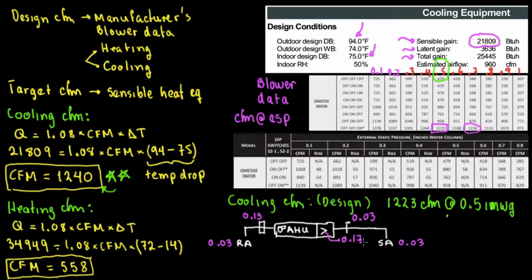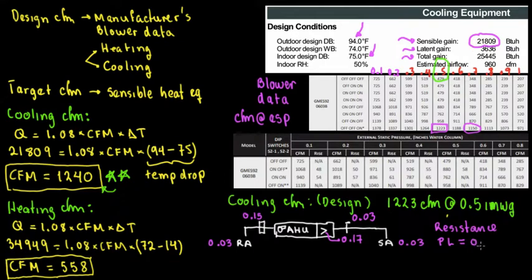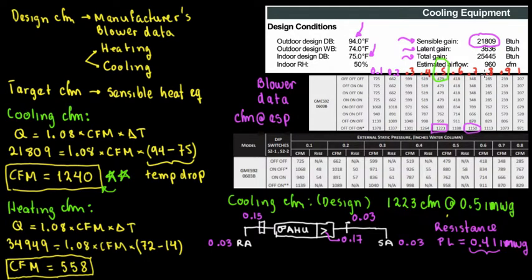Adding all these up, the total resistance or pressure loss equals approximately 0.41 inches of water column. Since we are at 0.41 and we selected the 0.5 speed point, we're able to achieve the proper CFM. We're in the safe zone.